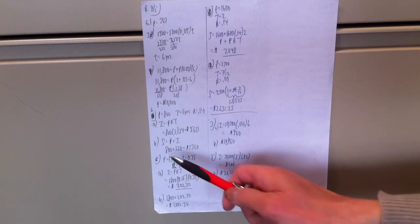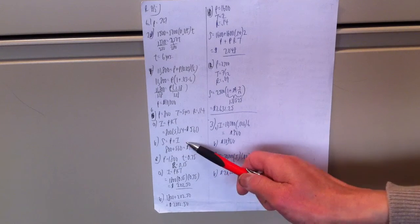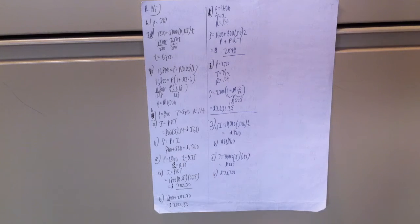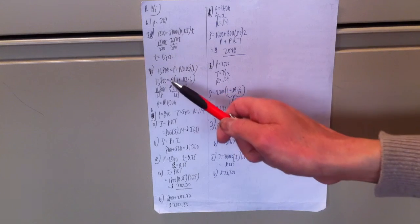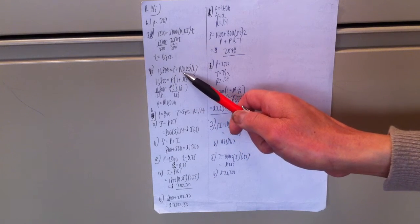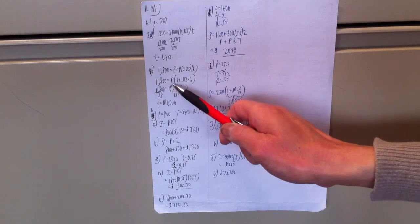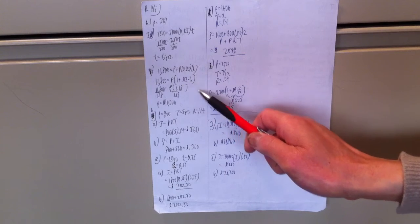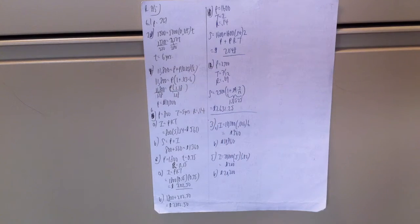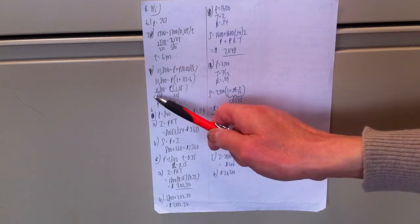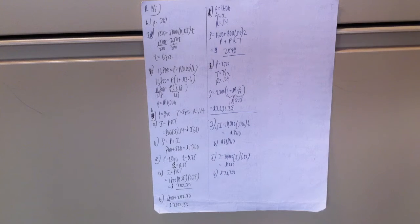Number 4 is a variation of S equals P plus I. Future value is principal plus interest. 11,800 equals P plus P times 0.03 times 6. Factor out the P, and you have 1 plus 0.03 times 6. That comes out to be 1.18. Divide both sides by 1.18, and P is equal to 10,000.